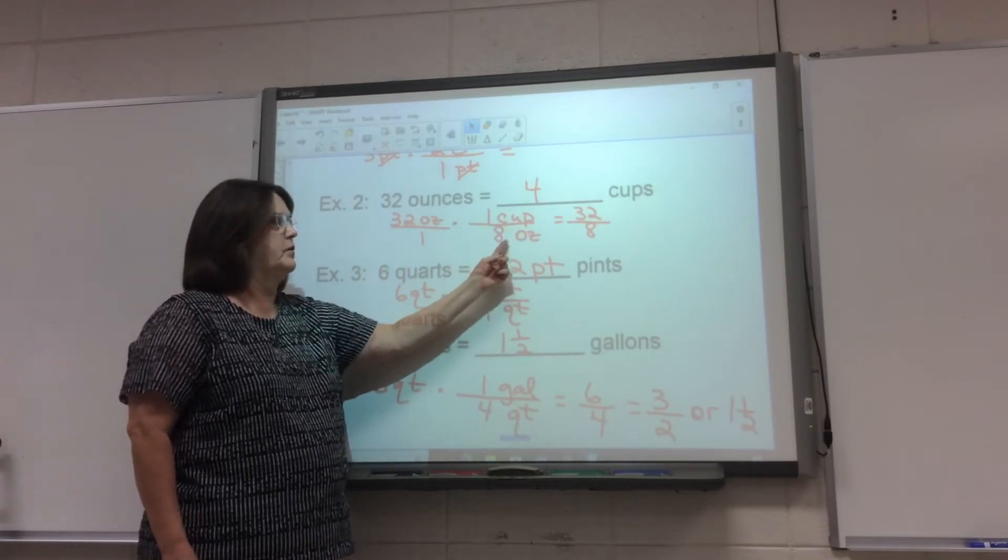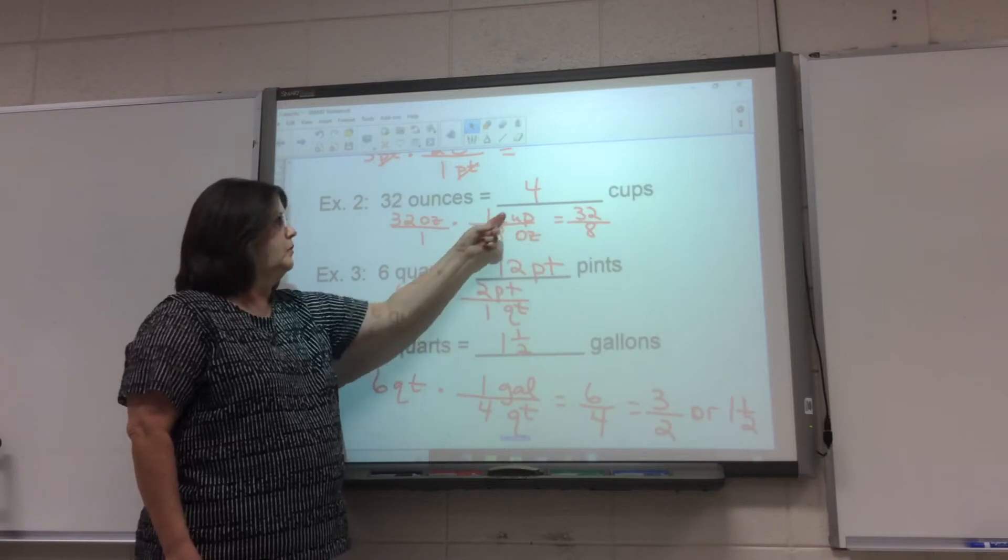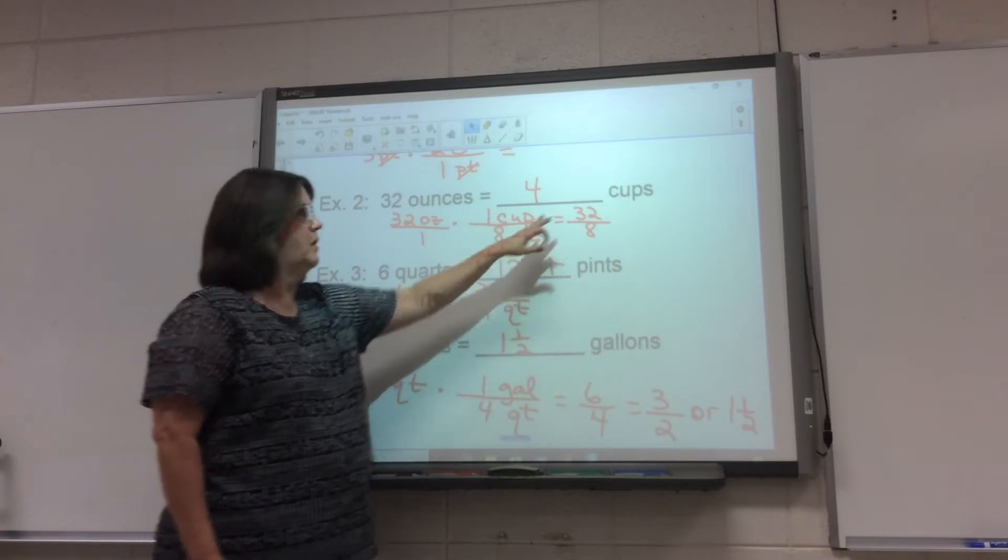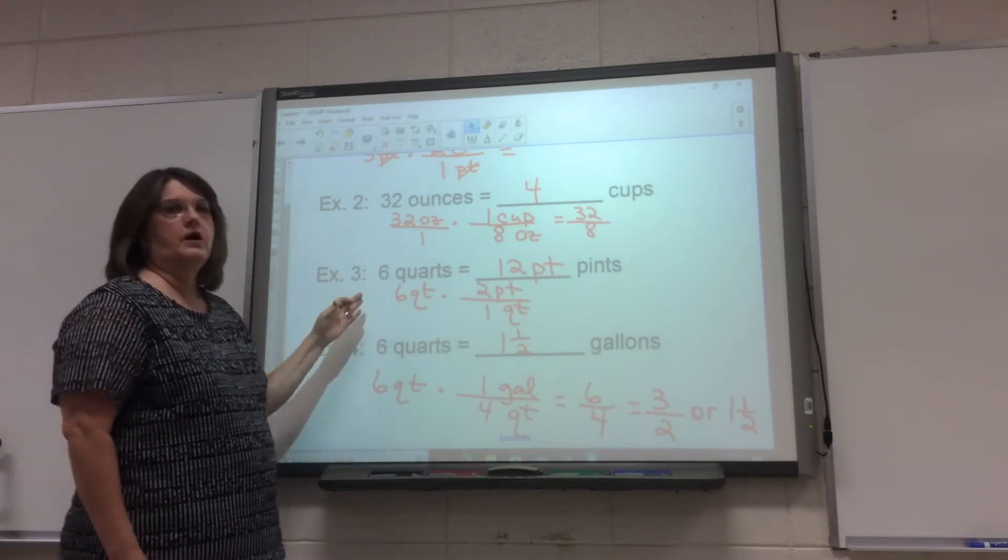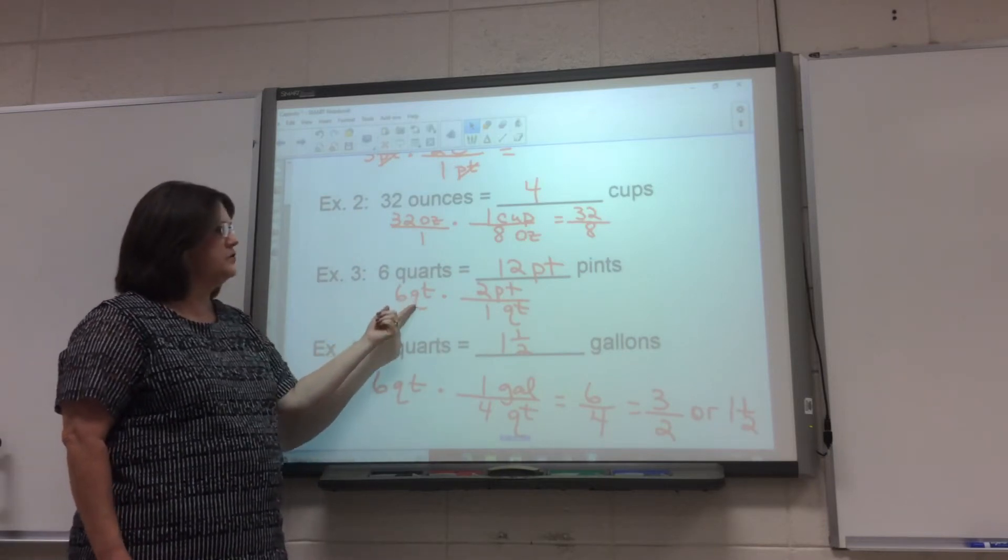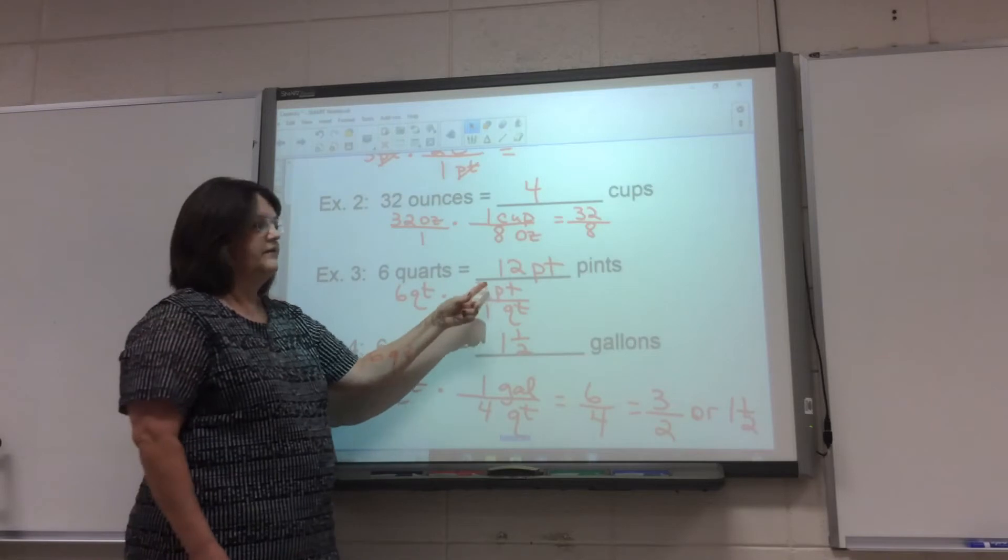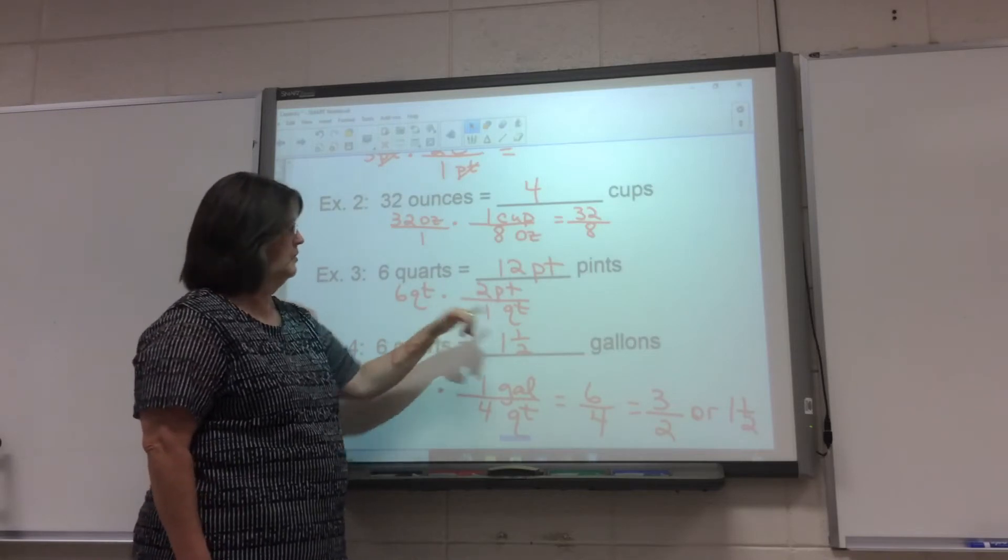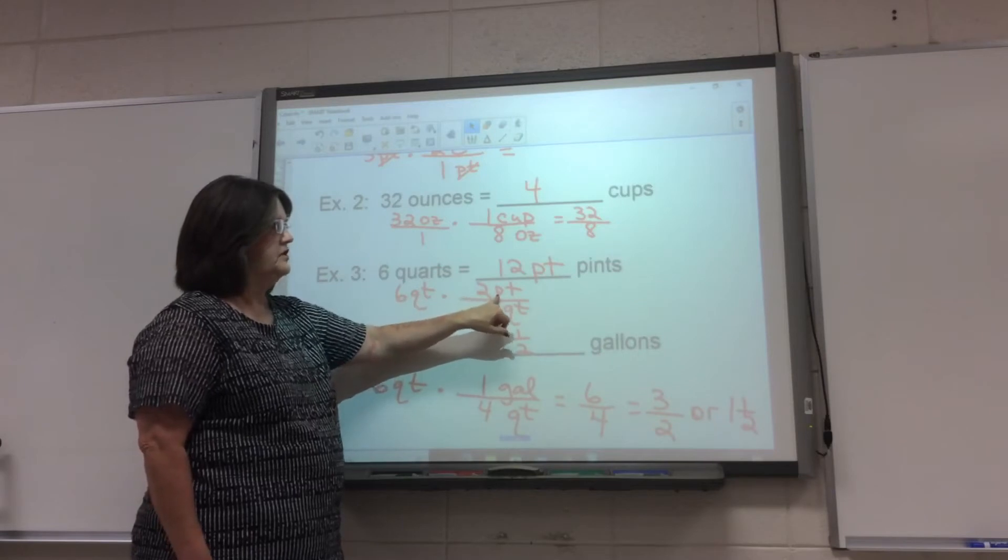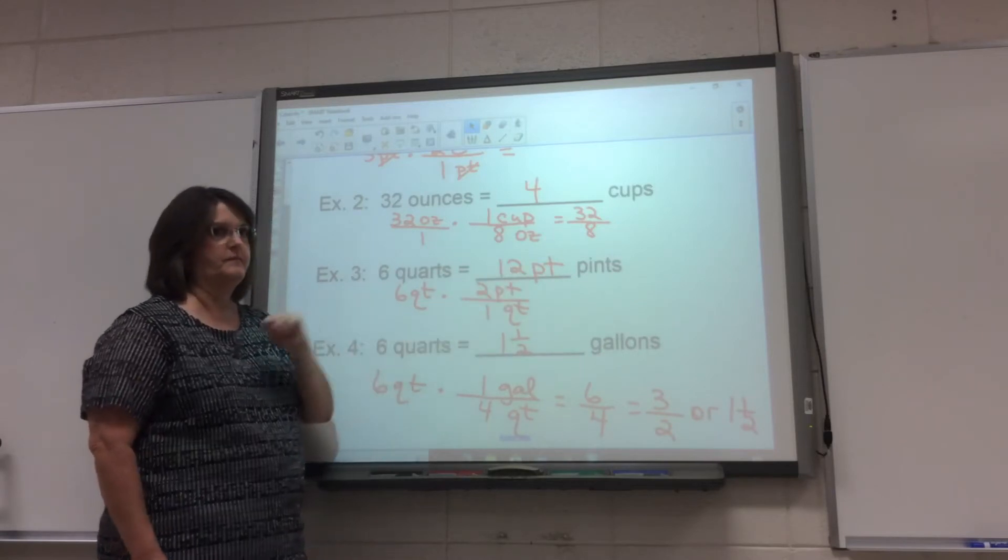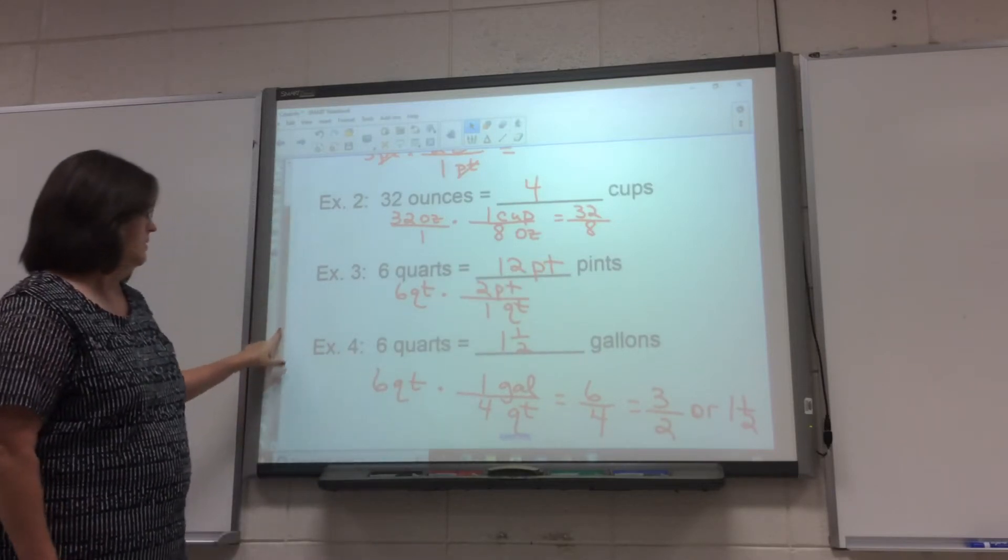So eight ounces goes here, one cup goes here. 32 over eight is four. Six quarts, want to know how many pints that is. So six quarts times there's two pints in a quart, so one quart in the denominator because quarts is here, and two pints here. So that makes 12 pints, multiplying.